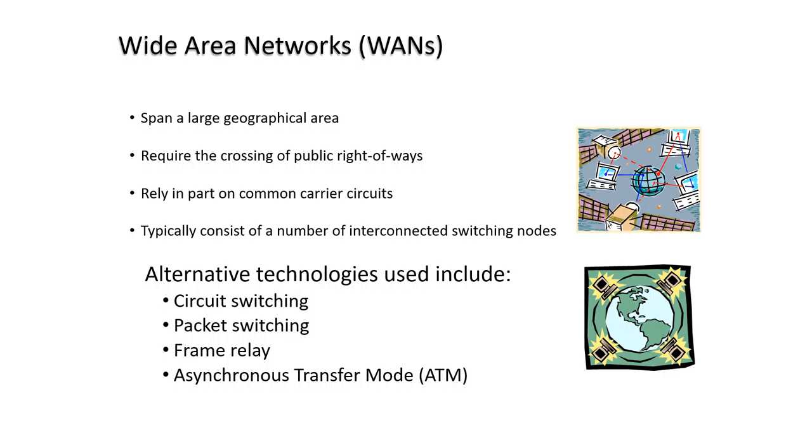Traditionally, WANs have been implemented using either circuit switching or packet switching. Frame relay and ATM networks are also widely used, but Gigabit Ethernet and Internet Protocol technologies are slowly replacing them.